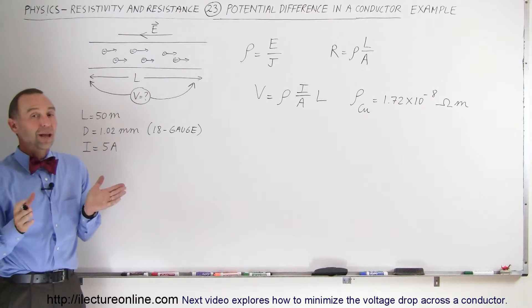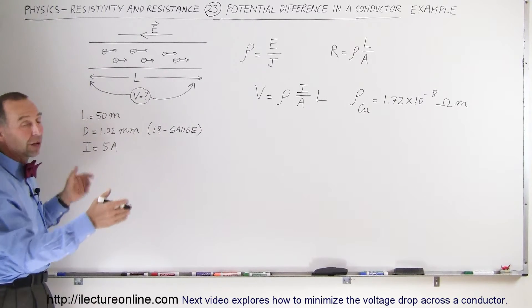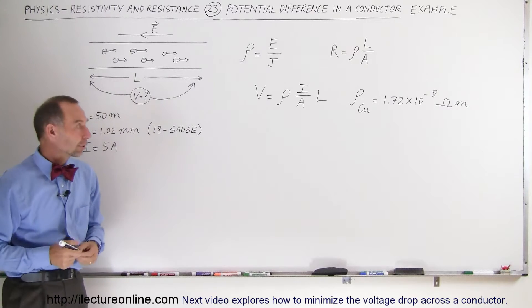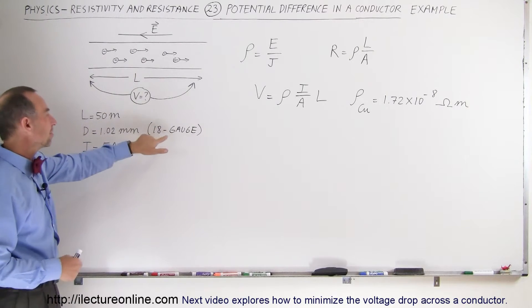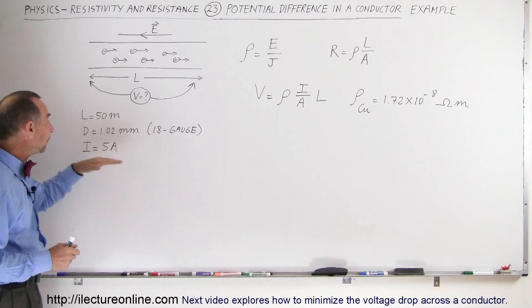Welcome to our lecture online and here's an example of how to find the potential difference across a conductor, a certain length of conductor. Let's say we want to consider 50 meters of the conductor. Let's say it's 18 gauge wire made out of copper.